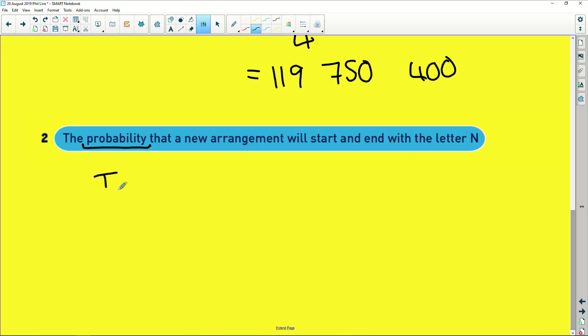This one is saying, find the probability that your rearrangement is going to start and end with N out of any possible rearrangements you had. So we're going to take that 12 factorial instead of this 109 million. So the total rearrangements is equal to 12 factorial. Because they didn't say anything about the unique ones. They just said any of them.